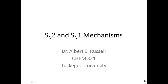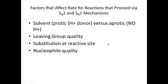Let's keep dealing with the SN2 and SN1 mechanisms. What I want to talk about right now is some things that affect the rate of SN2 and SN1 reactions. We're going to talk about the solvent — which is probably all we'll get to in this video — leaving group quality, substitution at the reactive site, meaning what substituents are there, and nucleophile quality.